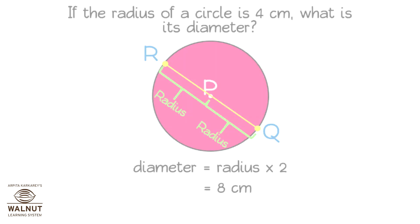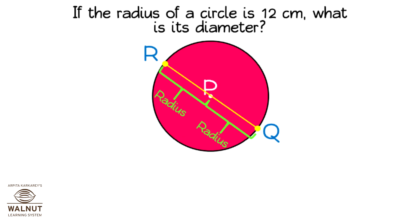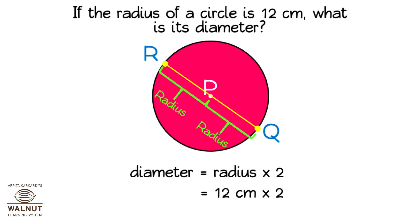If the radius of the circle is 12 centimeters, what is the diameter? Diameter is always double the radius, so diameter is equal to radius times 2. It is 12 cm times 2, which is 24 cm. The diameter is 24 cm.